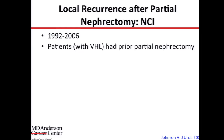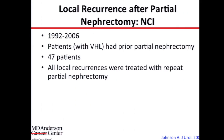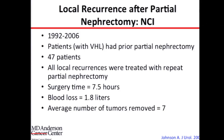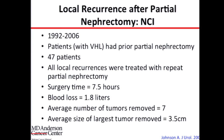The NCI series for recurrence after partial nephrectomy involved 47 patients, about 94% of whom had VHL. The difference from the Mayo series is that these patients had a second partial nephrectomy rather than ablation. Surgery time was about 7.5 hours, due to scar tissue from the first surgery and the presence of multiple tumors typical in VHL patients. Blood loss was almost 2 liters, and the average number of tumors removed was 7. The average largest tumor size was about 3.5 centimeters.